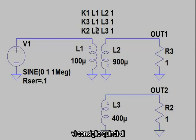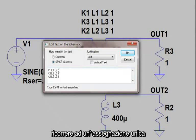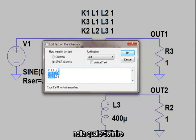A better approach is to use a single K statement in which you define all the inductors that are wound on the same core.